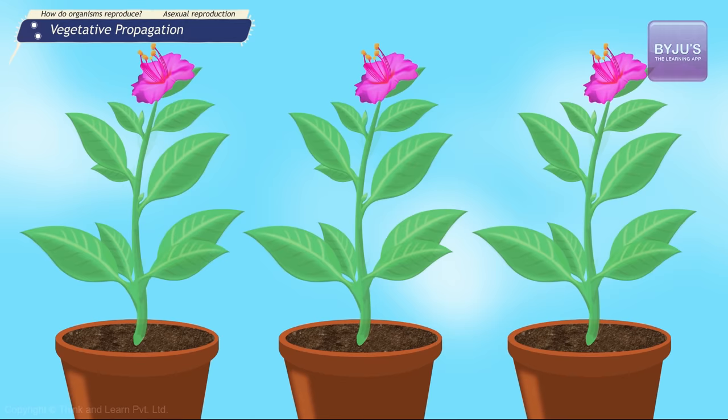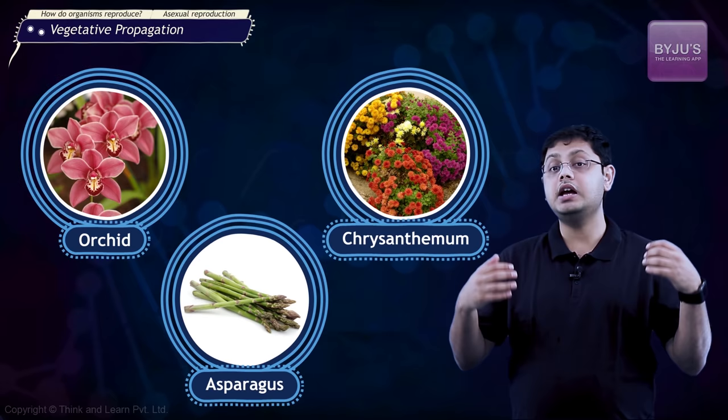Orchids, chrysanthemum, asparagus, and many other plants are now being grown by using plant tissue culture technology.